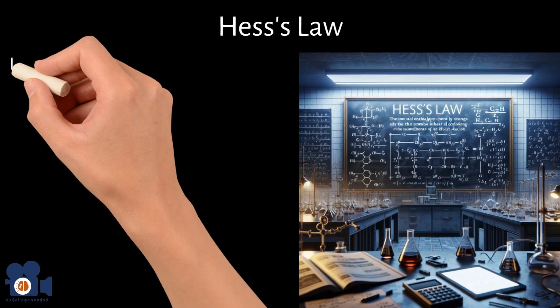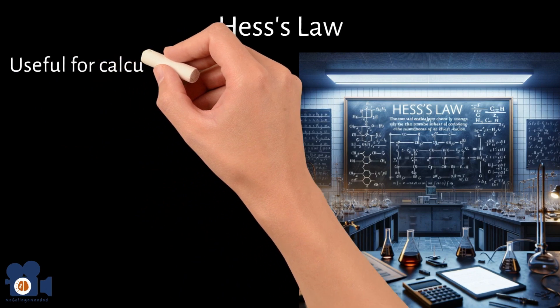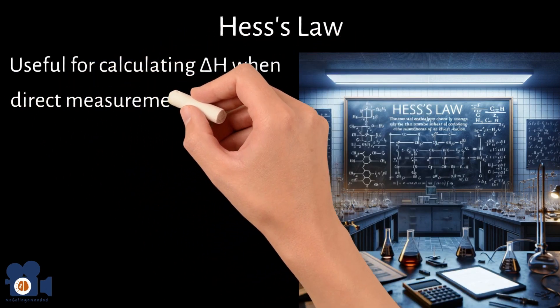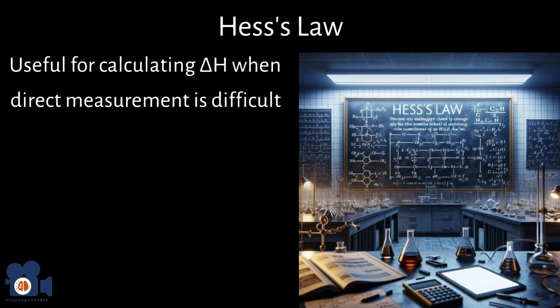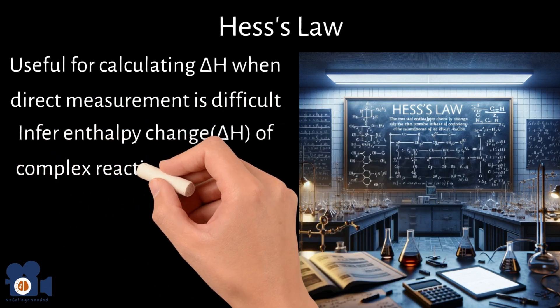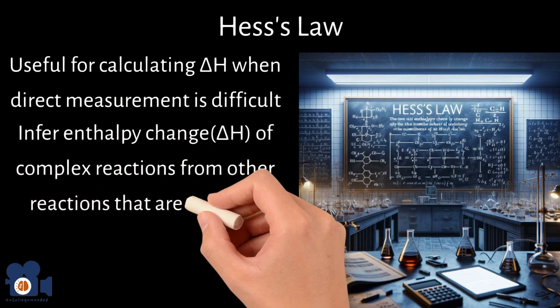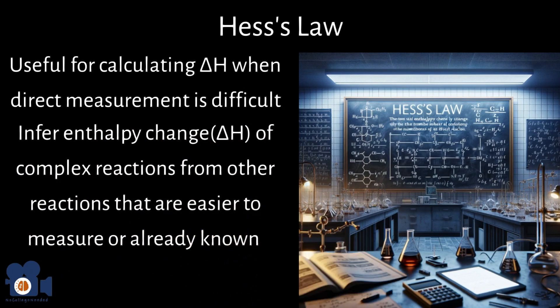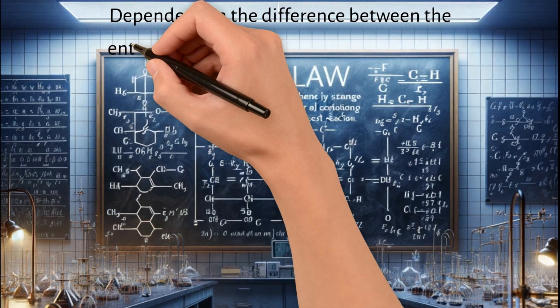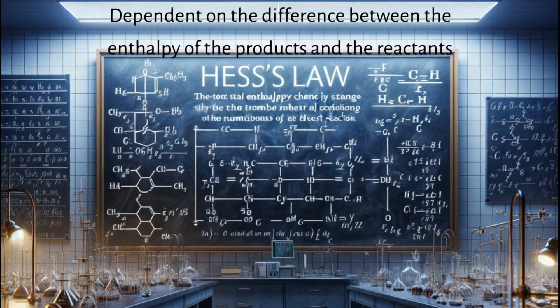Hess's law is particularly useful in thermodynamics for calculating enthalpy changes delta H for reactions where direct measurement is often difficult. It allows chemists to infer the enthalpy change of complex reactions by combining simpler reactions that are easier to measure or are already known. This is because the enthalpy change for a chemical process is dependent only on the difference between enthalpy of the products and the reactants and not on the specific pathway taken.